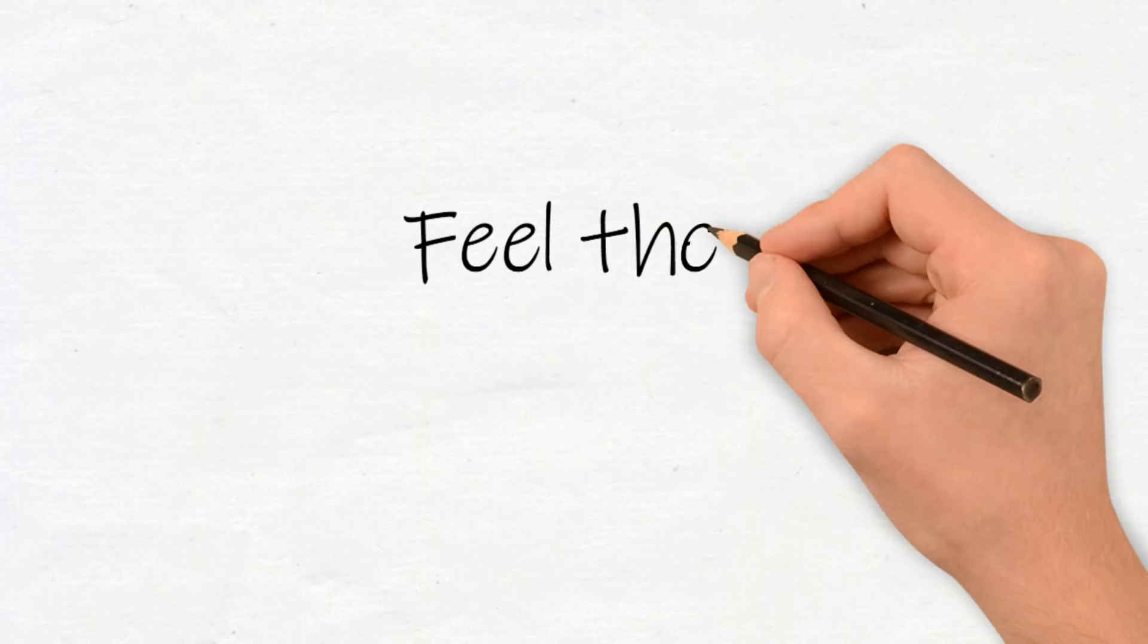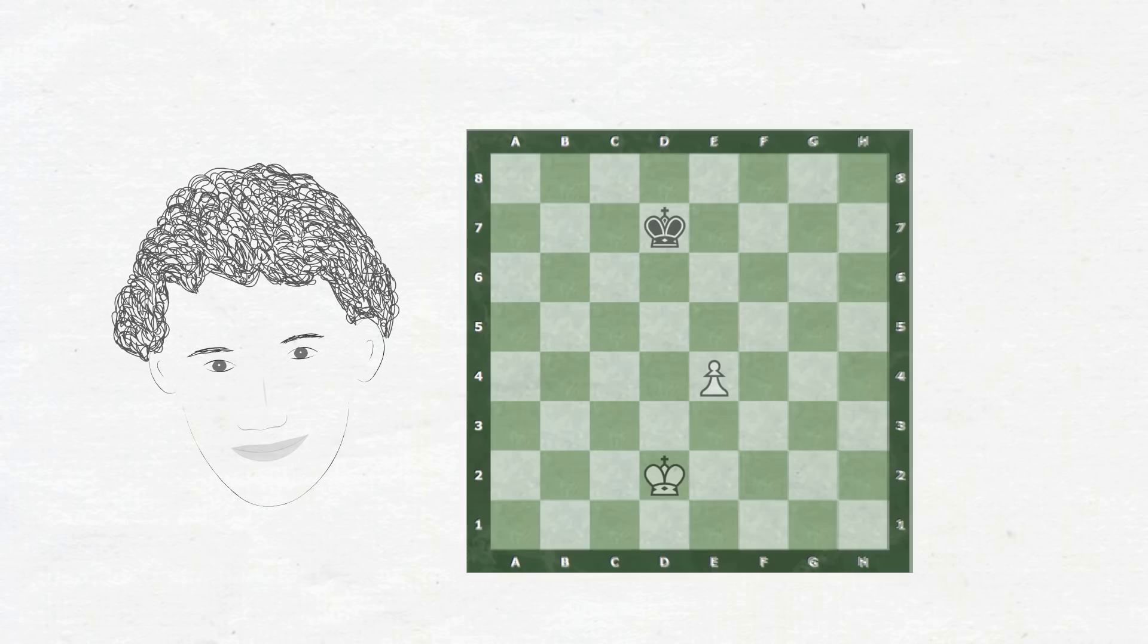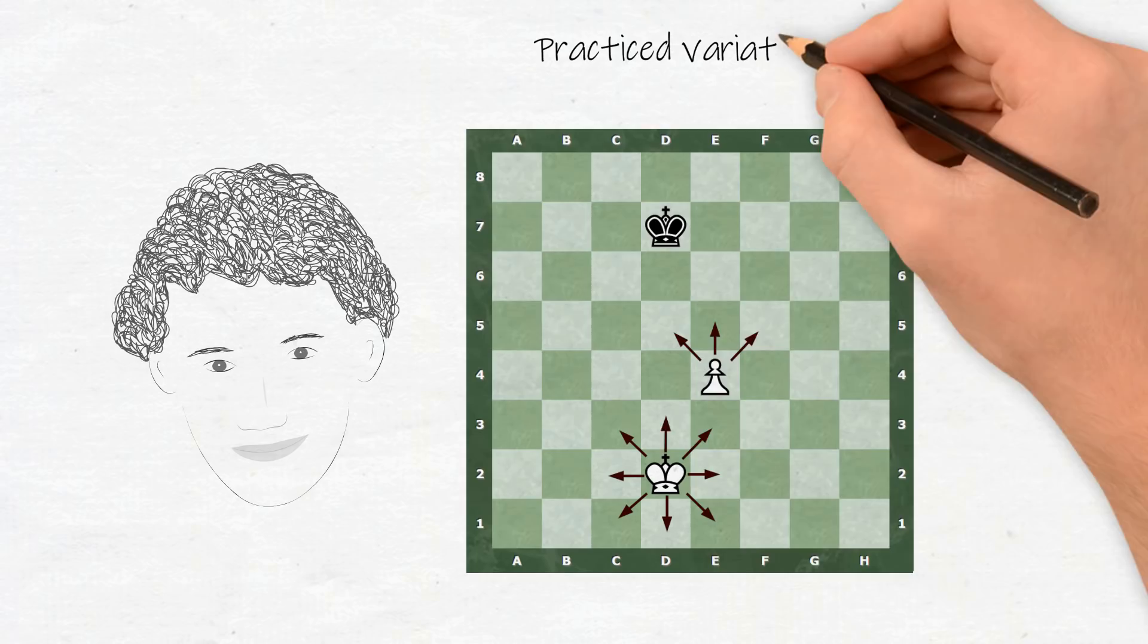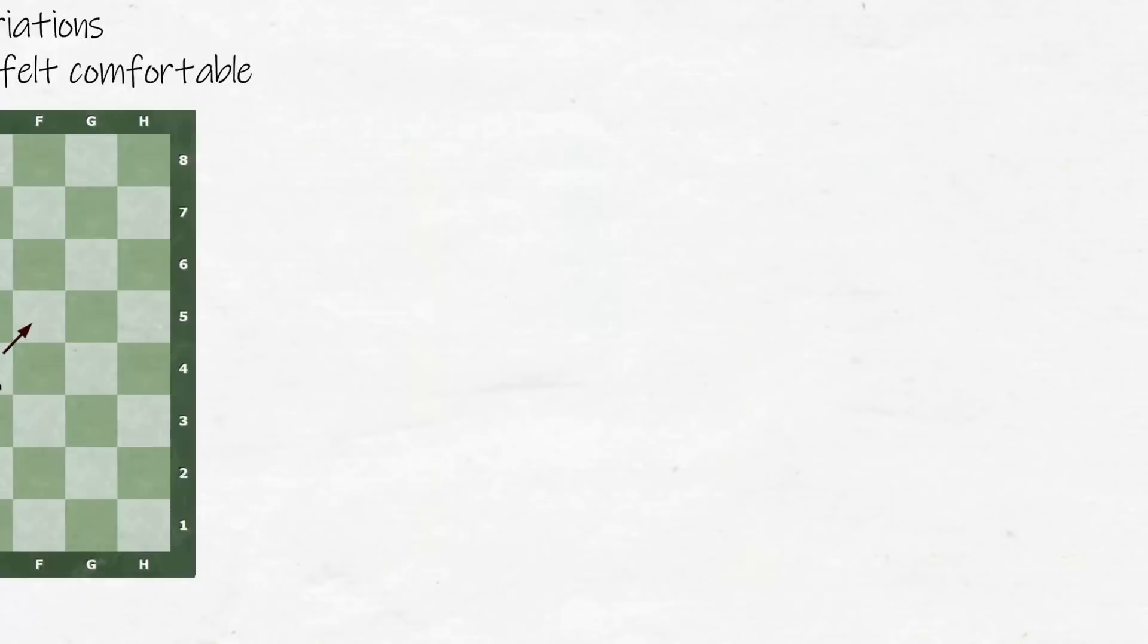Universal learning principle number one: feel the fundamentals. Josh didn't start learning chess by starting with all 32 pieces on the board. Instead, his teacher started by clearing the board so that it was just the king and the pawn against the king. He got a feel for how these simple pieces moved and played with many different variations until the pawn and king felt comfortable.